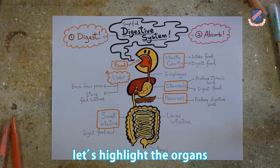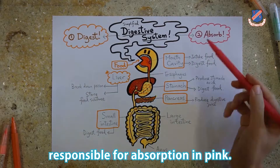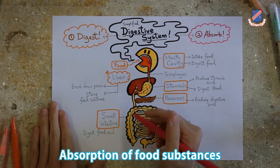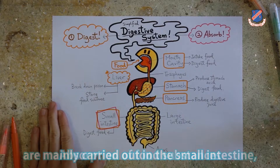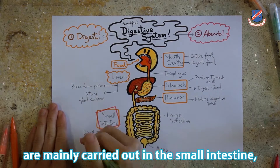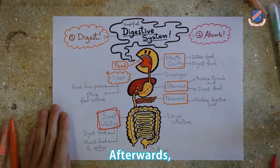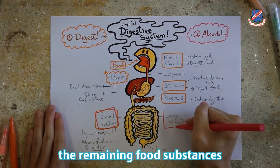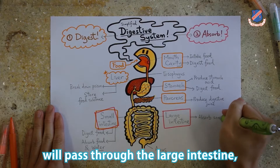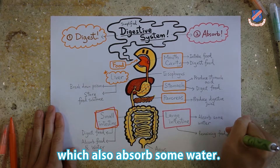Secondly, let's highlight the organs responsible for absorption in pink. Absorption of food substances are mainly carried out in the small intestine, which absorbs digested food and water. Afterwards, the remaining food substances will pass through the large intestine, which also absorbs some water.